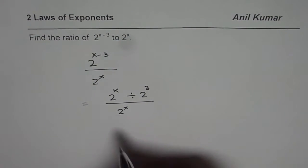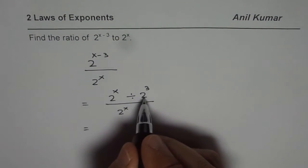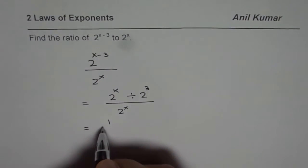Now 2 to the power of x over 2 to the power of x is 1. So basically I get 1 divided by 2 to the power of 3 or I could write this as 1 over 2 to the power of 3.